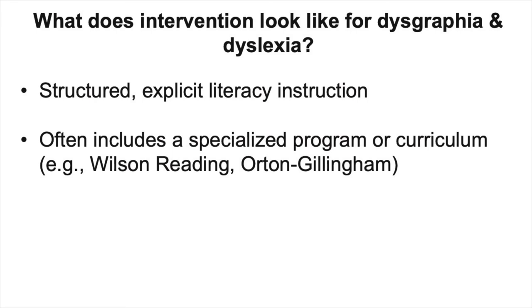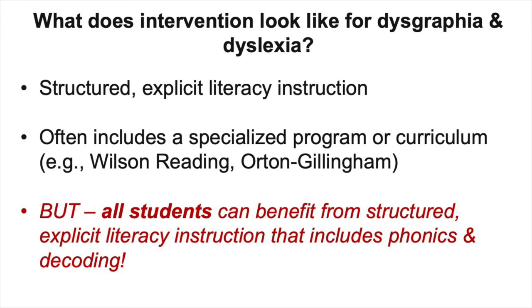Once we identify the students who need instructional support, it's important to pay attention to the science of reading and the latest research evidence. Currently, there's an abundance of evidence that shows that structured and explicit literacy instruction is the best way to support struggling readers. In some schools and for some students, that may mean using a specialized program or curriculum like the Wilson Reading System or Orton-Gillingham, in addition to what the school uses in general education for reading. Although students who are struggling with reading or who are at risk for dyslexia definitely need structured literacy instruction, the truth is that all students can benefit from this approach. Structured literacy should include an emphasis on phonics and decoding skills, especially at younger grades, as well as instruction in comprehension and vocabulary.